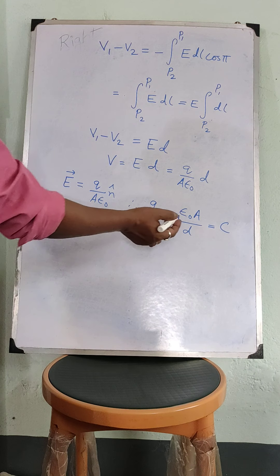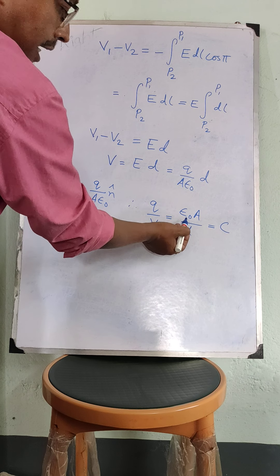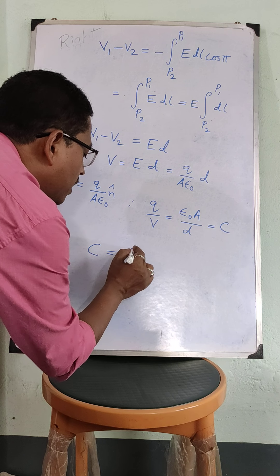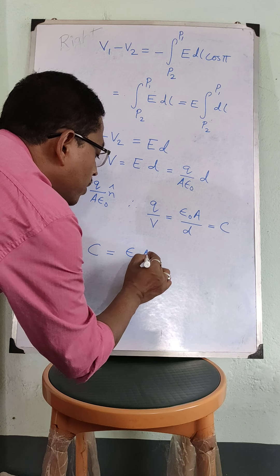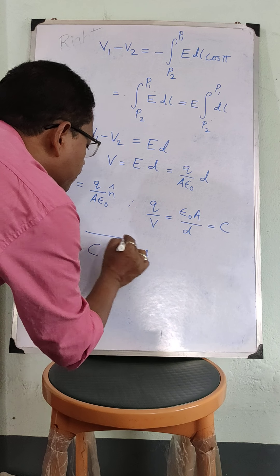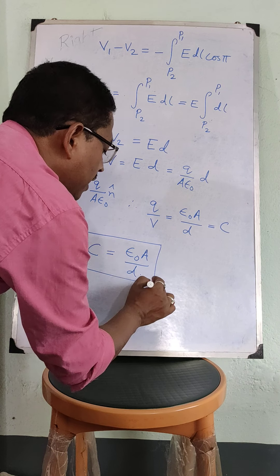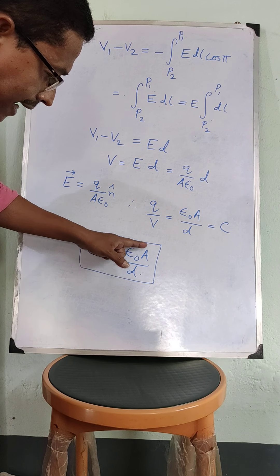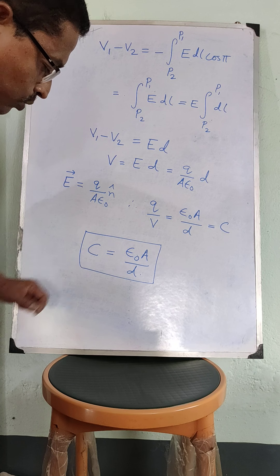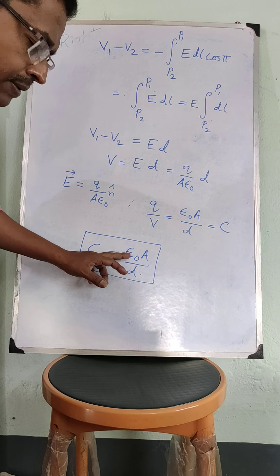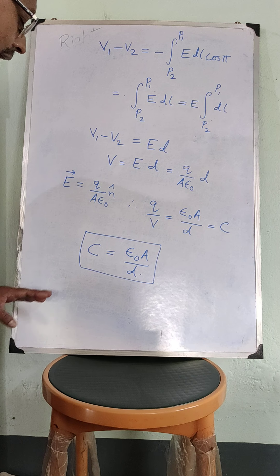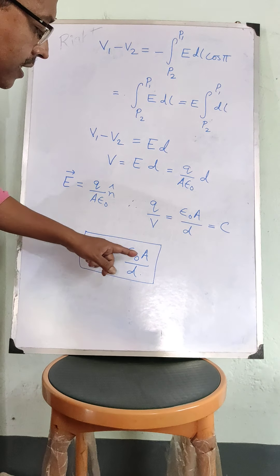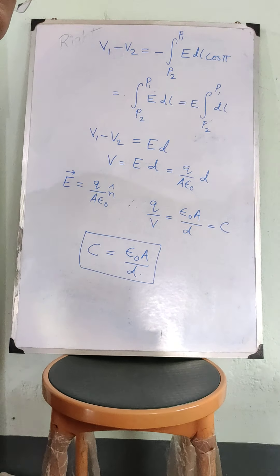The capacitance of a parallel plate capacitor is ε₀A divided by d. You can see that this capacitance depends on the area of the plates and the separation distance between the two plates. ε₀ is the permittivity of free space, which is a constant. This means capacitance depends on the geometrical factors of the conductors — the plate area and the separation distance.